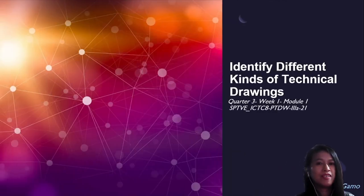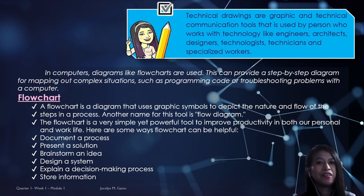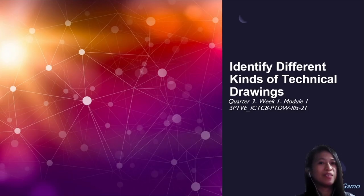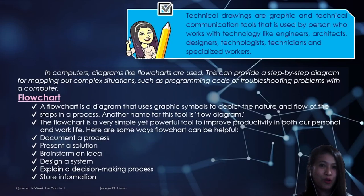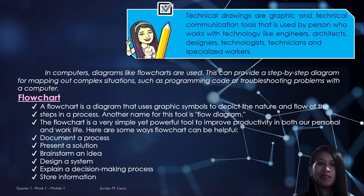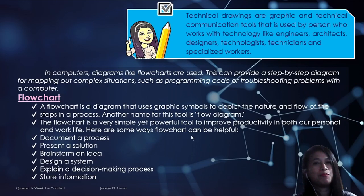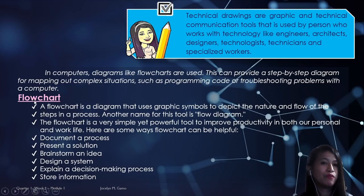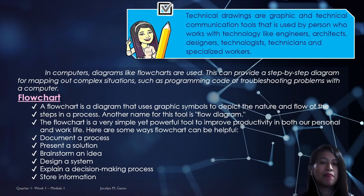Hello everyone. For today's lesson, I will be discussing how to identify different kinds of technical work. When we talk about technical drawing, we're talking about the graphic and technical communication tools used by a person who works with technology such as engineers, architects, designers, and technicians. A good example of technical drawing is a flowchart, and we have different schematic diagrams aside from flowcharts.